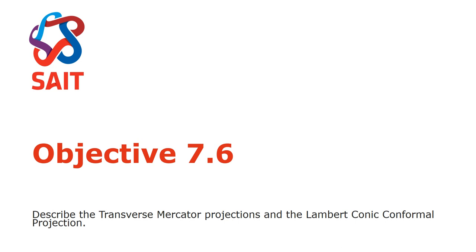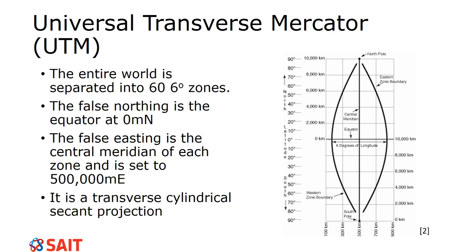We're going to jump right into the Universal Transverse Mercator. It is universal, meaning it's used across the world; transverse, meaning it's sideways; and Mercator, meaning it is a secant cylinder. What the Universal Transverse Mercator does is take the entire world and separate it into 6-degree zones, fitting a transverse Mercator cylinder to each particular zone.